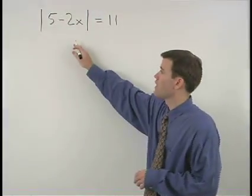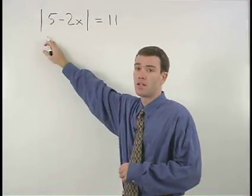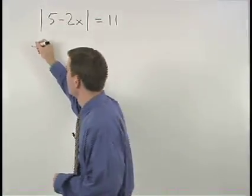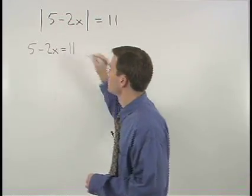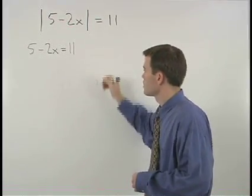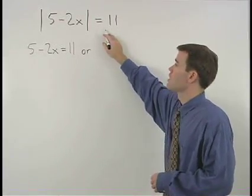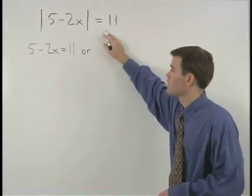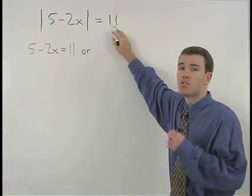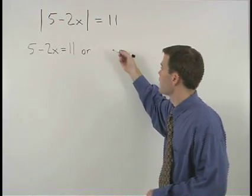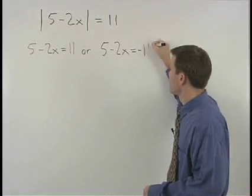Our first equation will look exactly like the original except for the absolute value signs. So we have 5 minus 2x equals 11. Our equations will be separated by the word or, and our second equation will look exactly like the original except for the absolute value signs and we'll change this 11 to a negative 11. So we have 5 minus 2x equals negative 11.